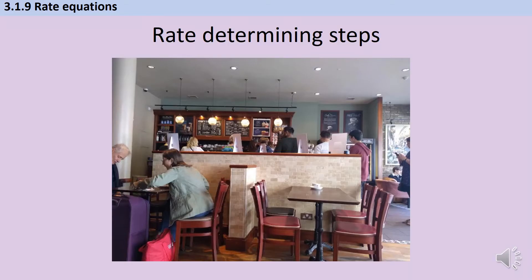Most chemical reactions don't just happen in a single step — they're multi-step processes that we sum up using a single symbol equation. If you're doing A-level biology you'll be familiar with this: processes like respiration and photosynthesis at GCSE have one simple equation, but at A-level you're faced with glycolysis, the Krebs cycle, and oxidative phosphorylation. The same thing is true in chemistry.